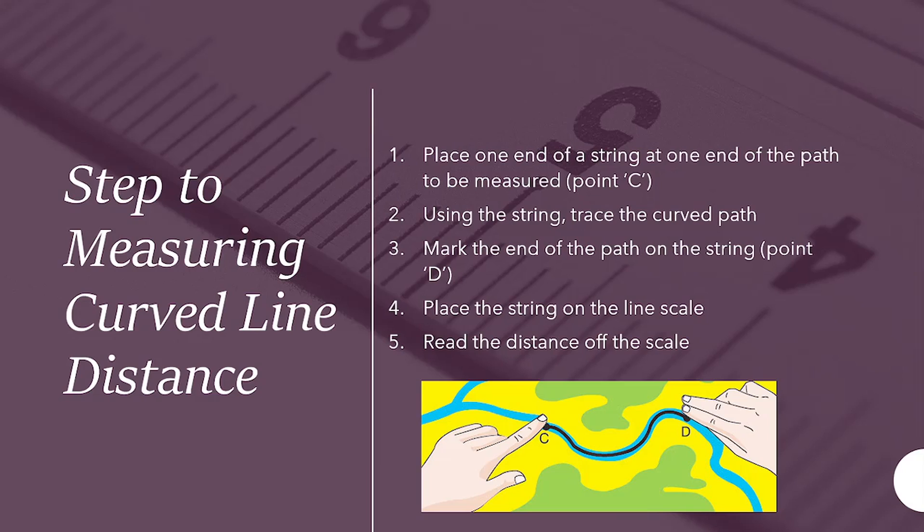These are the steps to measuring curve line distances. It's similar to how you measure the straight line distance but instead of using paper you would use a string so you would get the curves in there when you are measuring the distance. You will usually use the string to trace the curve path and mark the end of the string at the two points you want to measure between. As you can see here you will want to measure between points C and D. Then after that you will place the string on the scale and then read the distance and convert it if necessary.